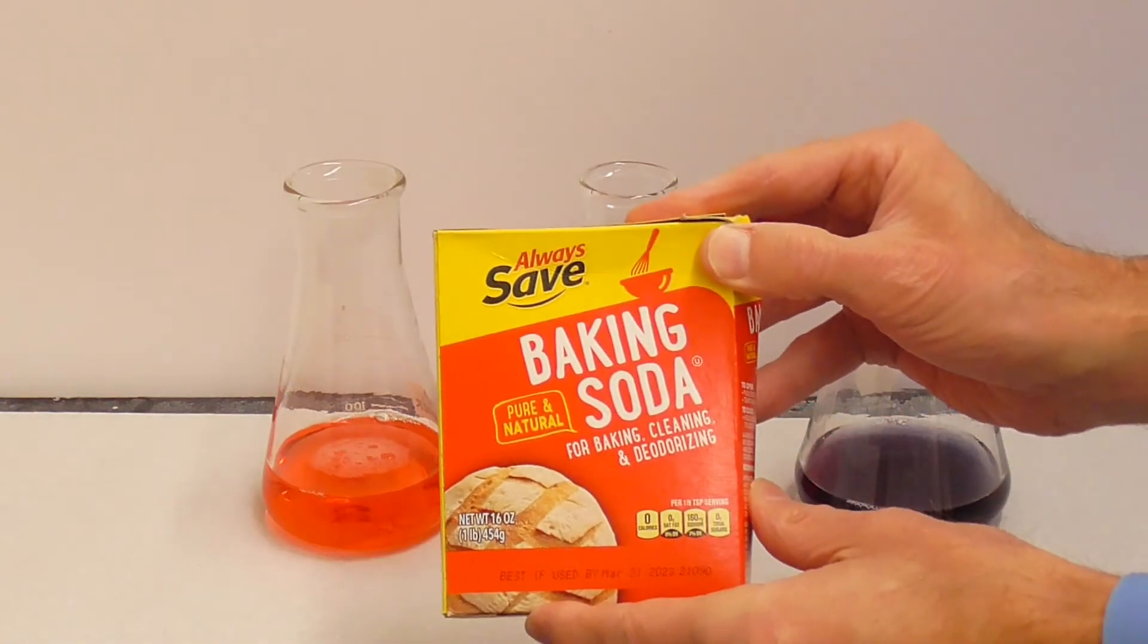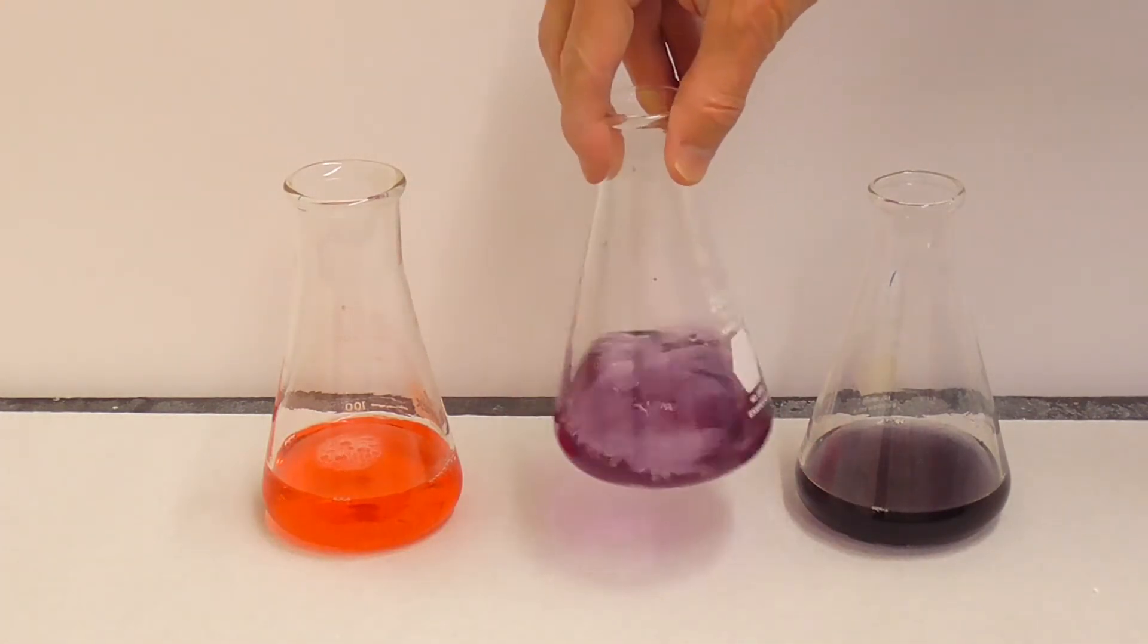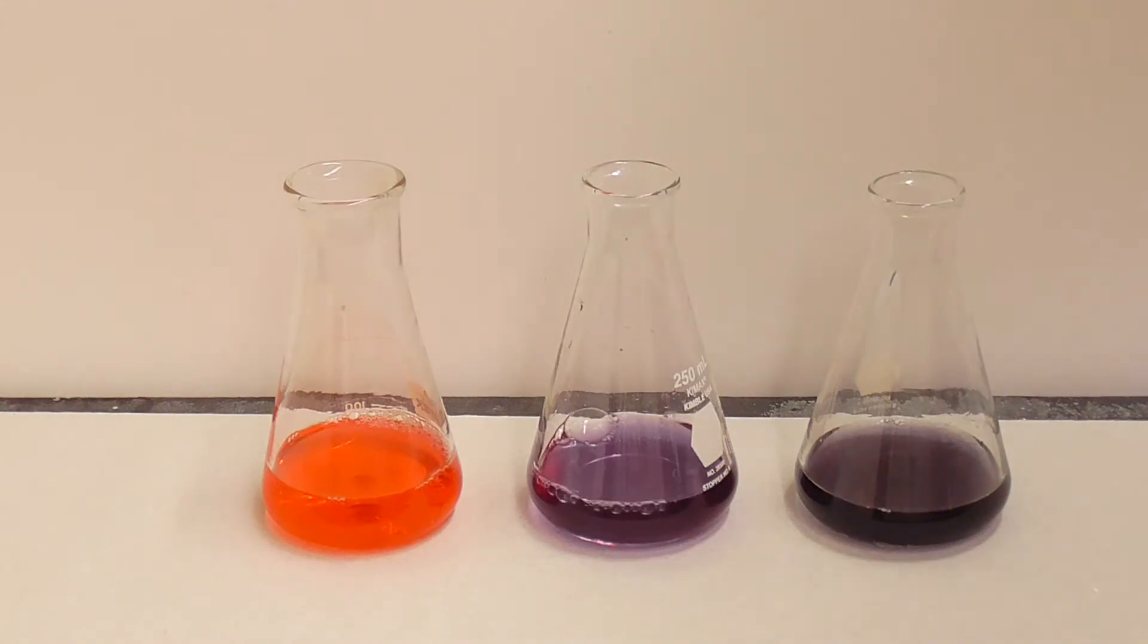Let's add some baking soda to the flask that contains water to raise the pH just a bit. We get a shift in color to a nice purple when we add baking soda.